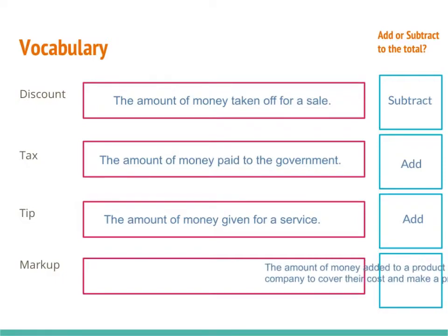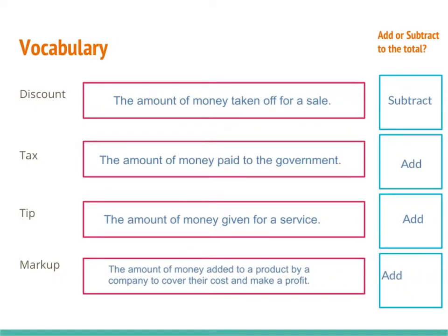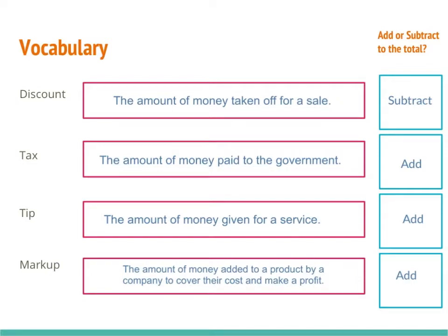Markup is maybe one you haven't heard of before. Markup is the amount of money added to a product by a company to cover their overhead costs and to make a profit. So when you buy something from a store like Target, Target has to charge you a little bit more than they paid for it so that they can pay their employees, the rent on their building, and the power and water. They have to have all of those expenses covered, and to do that they mark up their products.